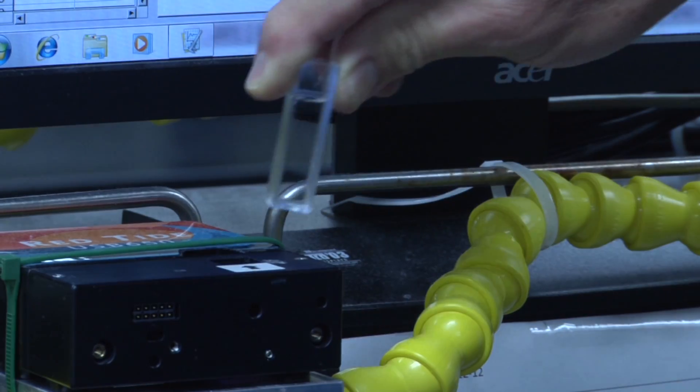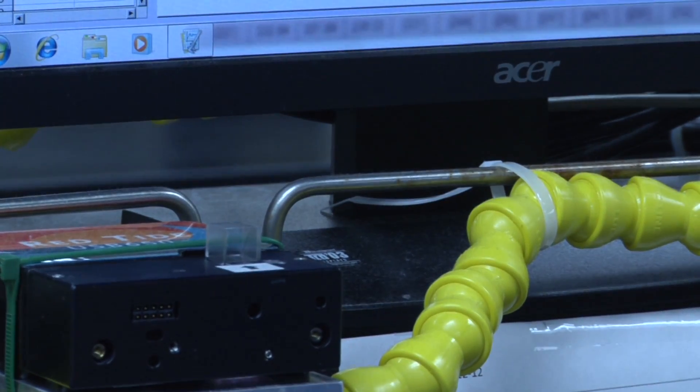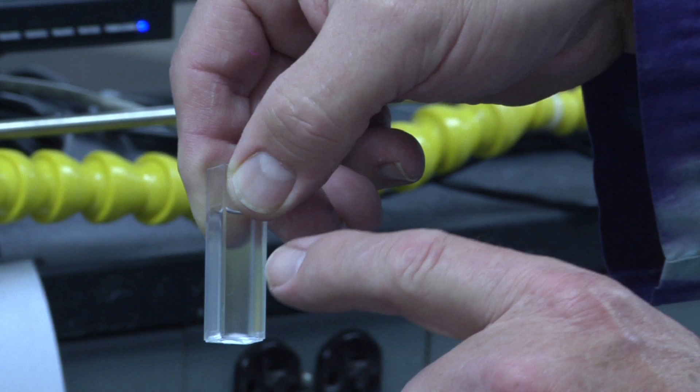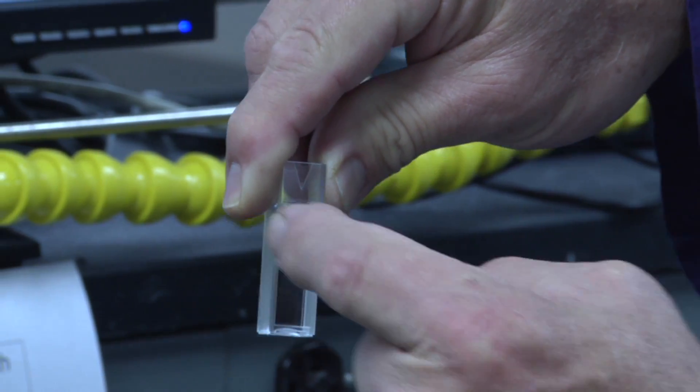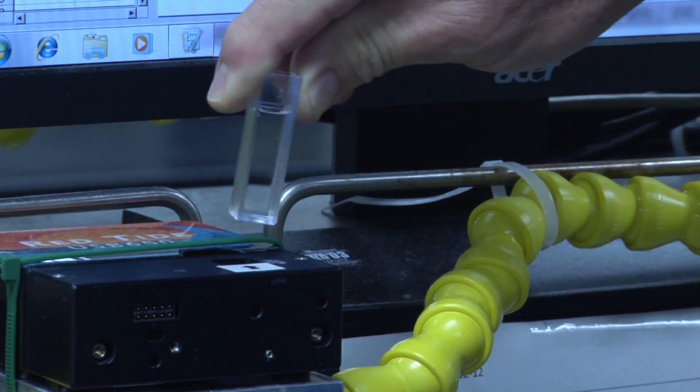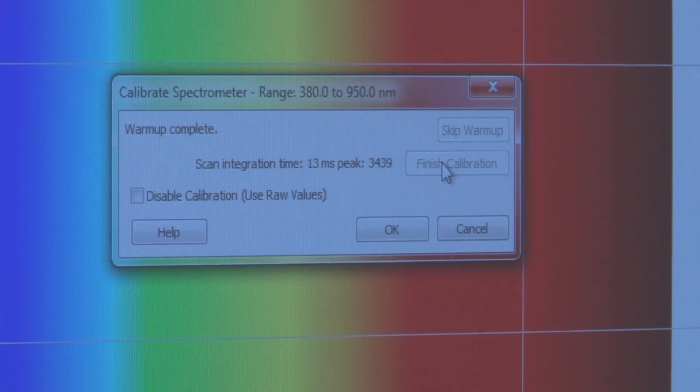Next you will need to finish the calibration with the cuvette containing pure water in the cell holder. Notice that the cuvette has clear sides and frosted sides. Make sure the clear sides line up with the light path as indicated on the holder. With this reference cuvette in place, select the finish calibration button.